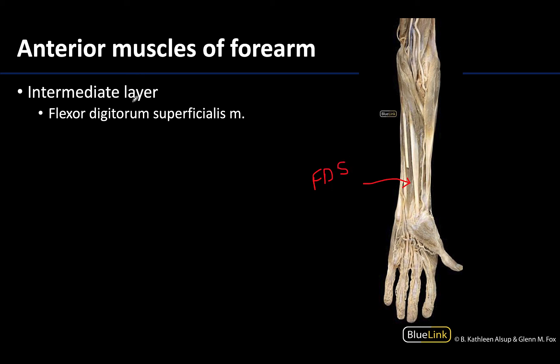The flexor digitorum superficialis is often called part of the intermediate layer — it's the only muscle in that layer — but it is sometimes lumped in with the superficial layer because it also has an attachment at the medial epicondyle. It sits just deep to the superficial layer, and its tendons travel through the carpal tunnel in this general region, then pop out heading towards the digits.